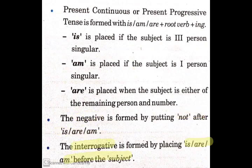For interrogative sentences, we place is, am, or are before the subject. For example: 'Is she studying?' 'Are they playing?' 'Is she eating?' In that way, we make interrogative sentences.